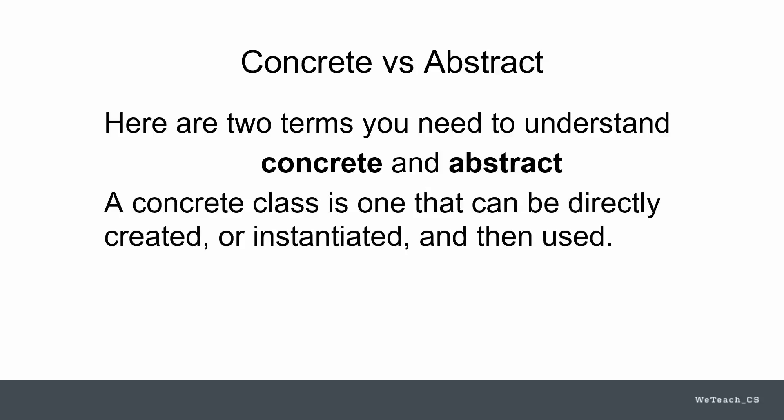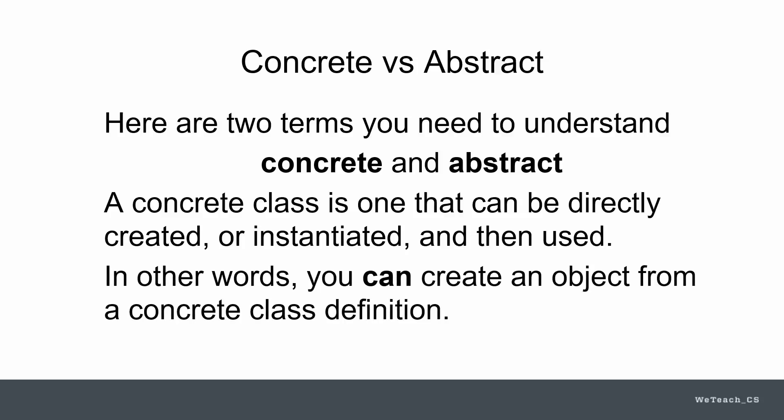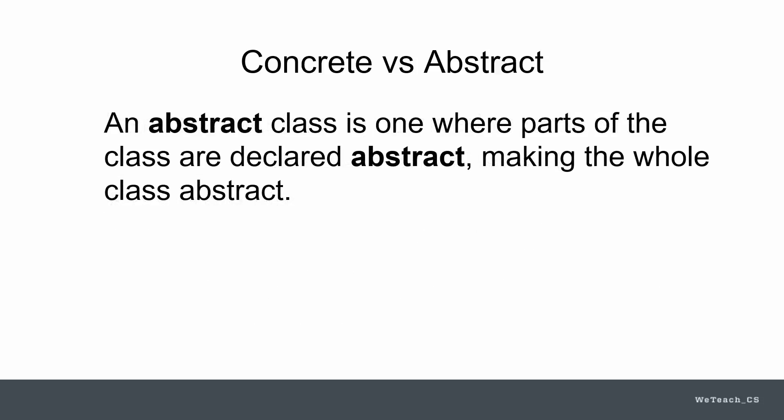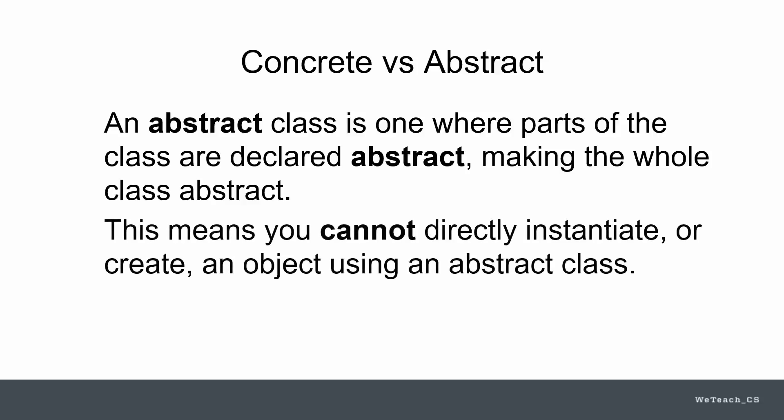A concrete class is one that can be directly created or instantiated and then used. In other words, you can create an object from a concrete class definition. This is a real, usable class. An abstract class is one where parts of the class are declared abstract, making the whole class abstract. This just means that those parts that are abstract are incomplete or not finished. It also means you cannot directly instantiate or create an object from an abstract class.